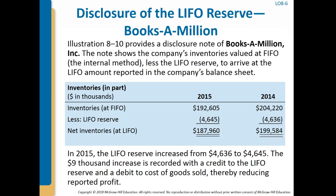Under LIFO, inventory is reported in the 2015 balance sheet at a lower amount, which indicates the need for a LIFO reserve of $4,645. The LIFO reserve at the beginning of 2015 was already $4,636, so its balance needs to be increased by only $9,000. The increase is recorded with a credit to the LIFO reserve. At the same time, we debit cost of goods sold, thereby reducing the reported profit.